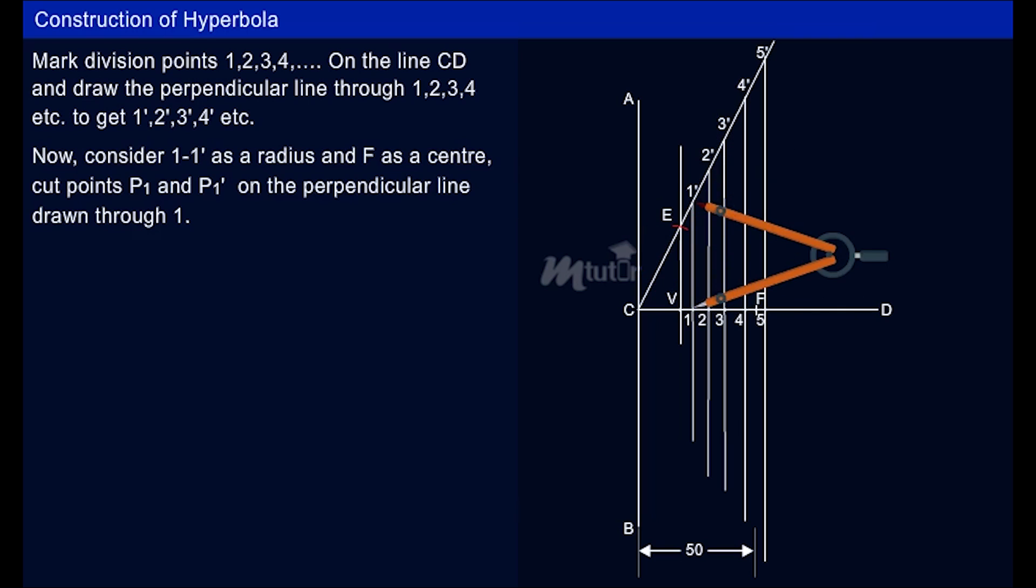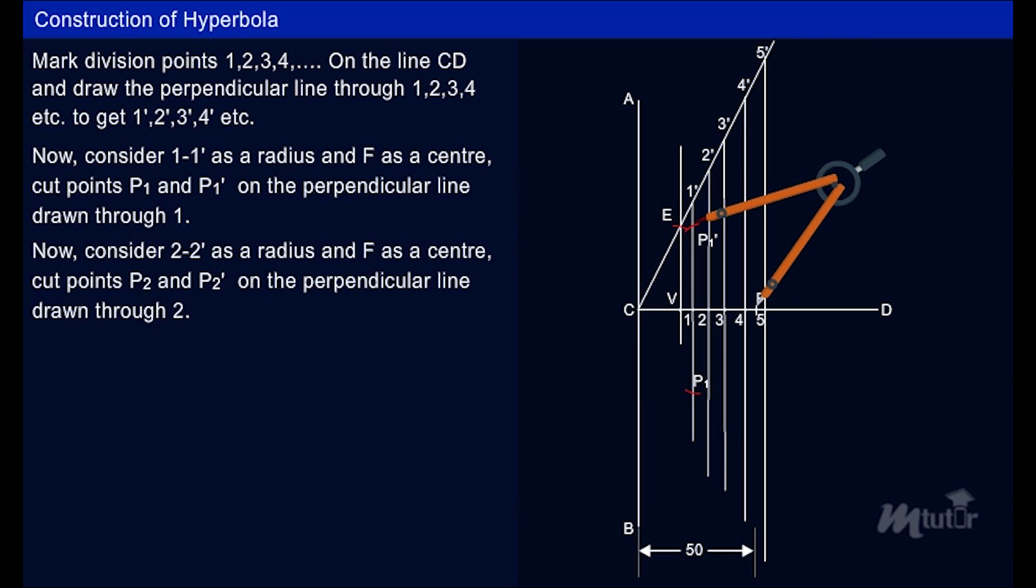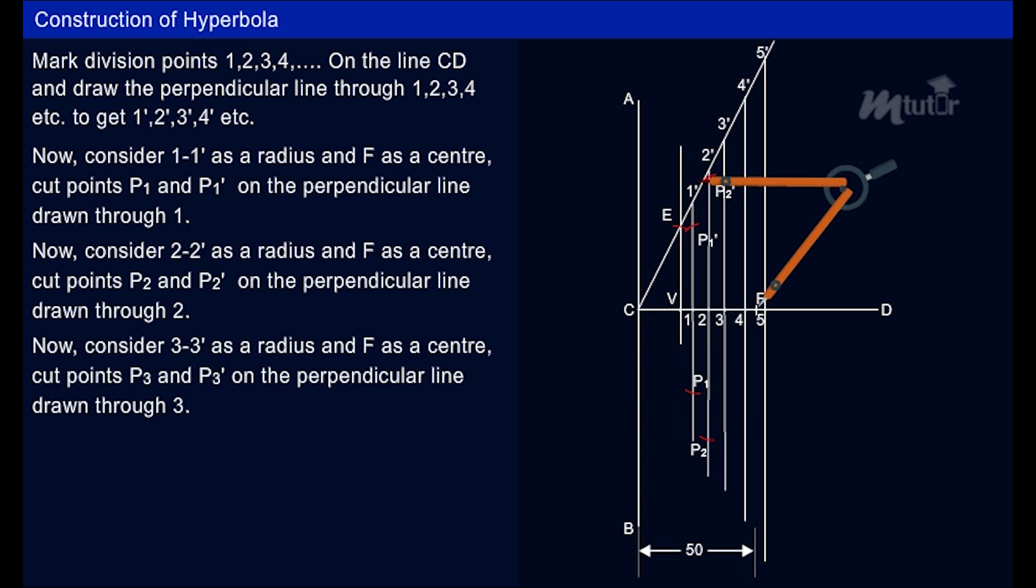Now consider 1-1' as a radius and F as a centre. Cut points P1 and P1' on the perpendicular line drawn through 1. Now consider 2-2' as a radius and F as a centre. Cut points P2 and P2' on the perpendicular line drawn through 2. Now consider 3-3' as a radius and F as a centre. Cut points P3 and P3' on the perpendicular line drawn through 3.